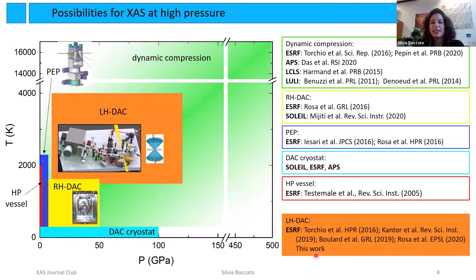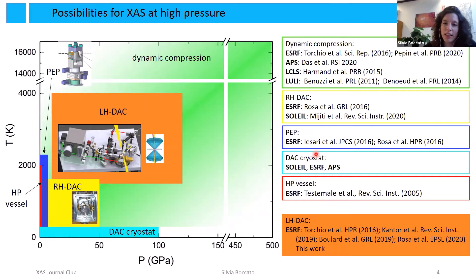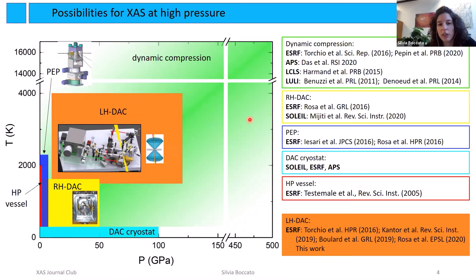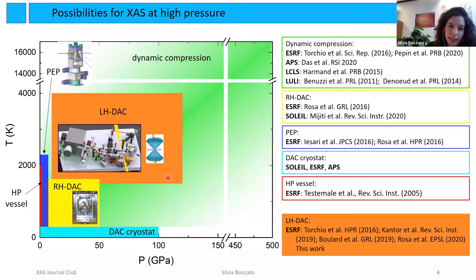This slide summarizes the different high-pressure techniques coupled to XAS. For low pressures, we can use the Paris-Edinburgh press or high-pressure vessels. For medium-range pressures, we can use a diamond anvil cell coupled with resistive heating for lower temperatures or laser heating for higher temperatures. For higher pressures and temperatures, dynamic compression can be used. The phase diagrams of the materials we studied fall in a pressure-temperature range suited to the laser-heating diamond anvil cell.